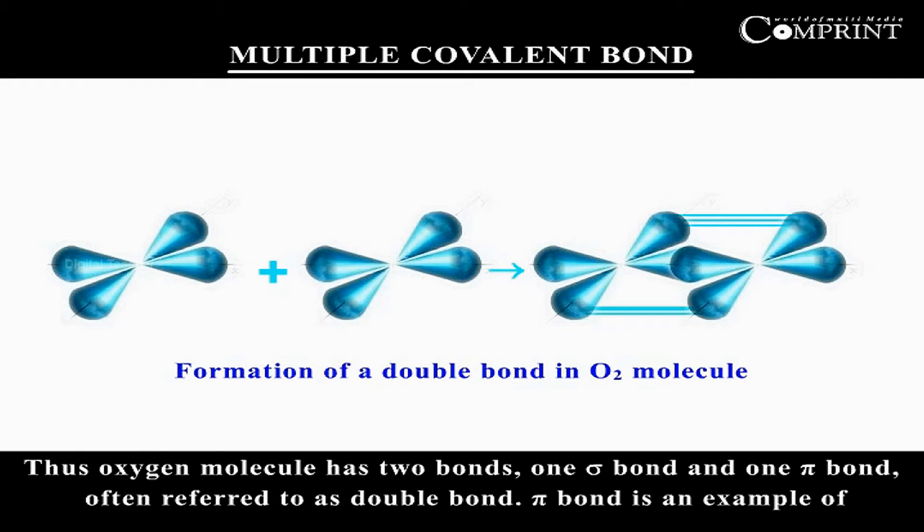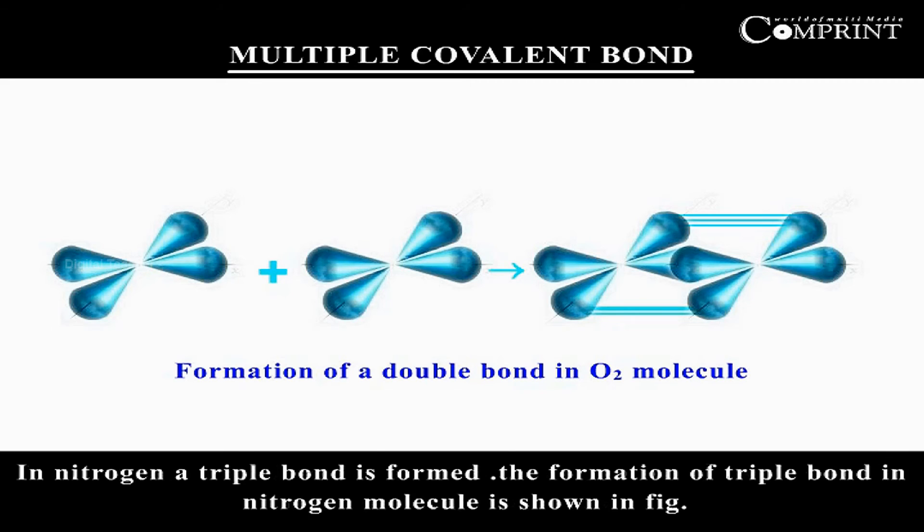Pi bond is an example of a multiple covalent bond. Thus, in nitrogen, a triple bond is formed.